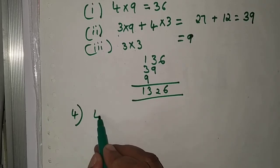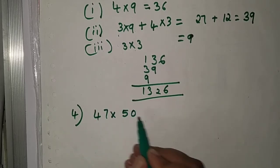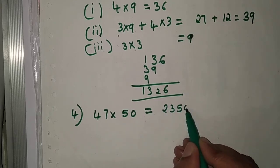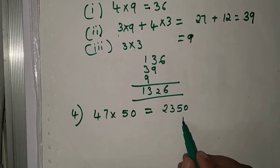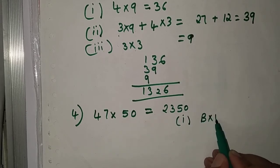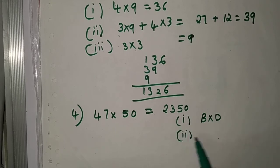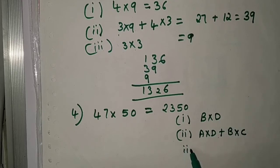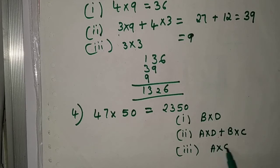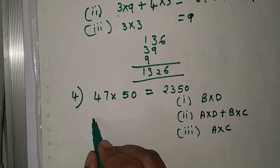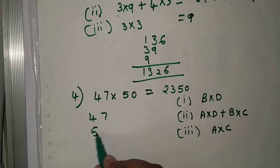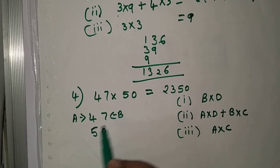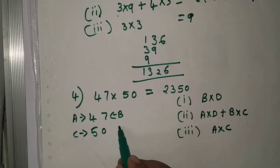Fourth problem: 47 into 50, and the result is 2350. Same method with three steps: first is B into D, second is A into D plus B into C, third is A into C. Writing 47 and 50, A is 4, B is 7, C is 5, D is 0.